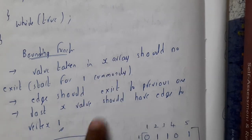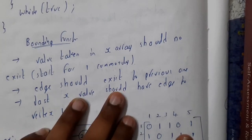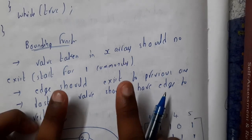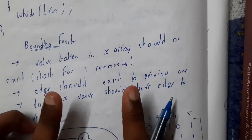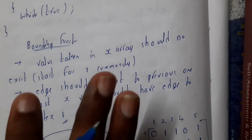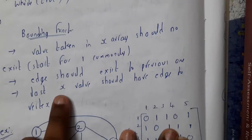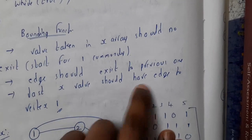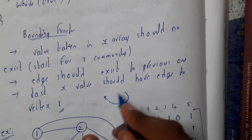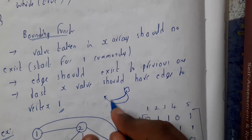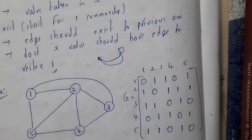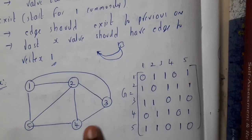We will be starting from 1 commonly. An edge should exist to the previous one — if you are connecting two vertices, there should be an actual edge between them originally, not some random edge that doesn't exist. The last x value should have an edge to 1, because at the end you should return back to 1.